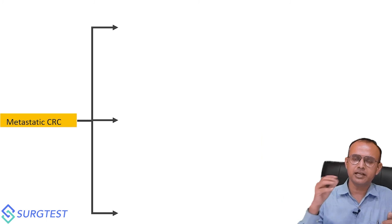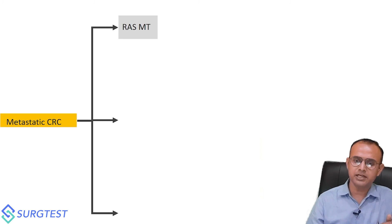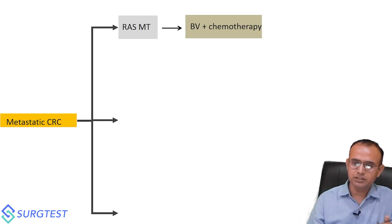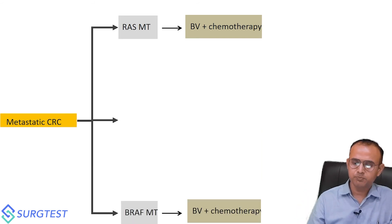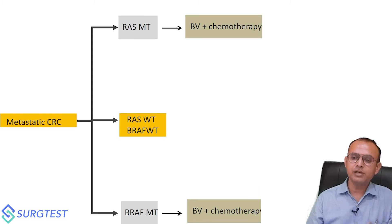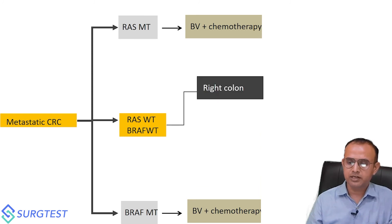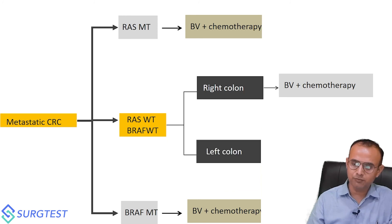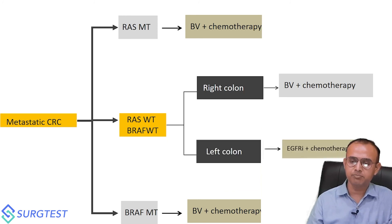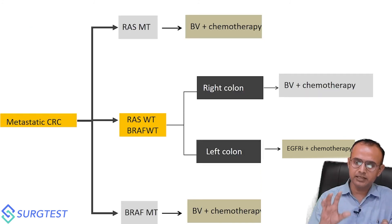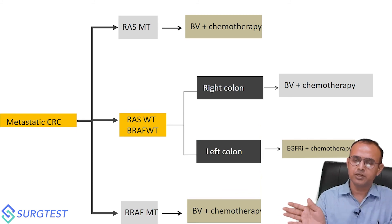In metastatic colorectal cancer, we have EGFR inhibitors like cetuximab and panitumumab, and VEGF inhibitors like bevacizumab. The key decision is whether the patient is RAS/KRAS mutant or wild type. If RAS mutant, use bevacizumab plus chemotherapy. If BRAF mutant, also use bevacizumab plus chemotherapy. Patients with RAS wild type and BRAF wild type are candidates for EGFR inhibitors.